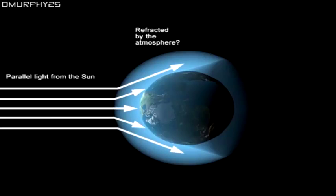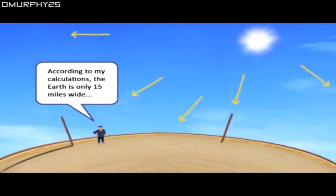So if the light from the Sun is always refracted, then that would mean that Eratosthenes' calculation was made with refracted light and therefore must be wrong, and the Earth must be much, much smaller.